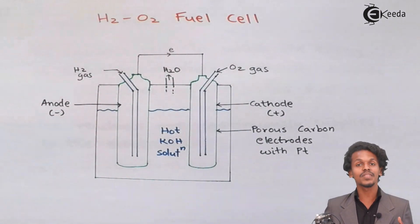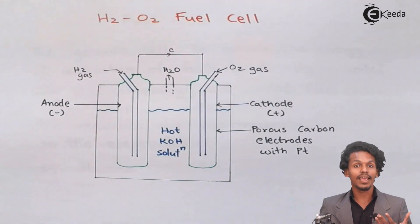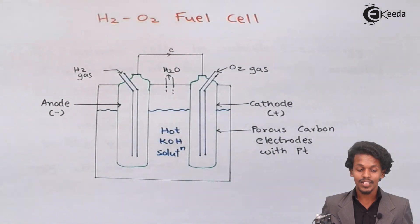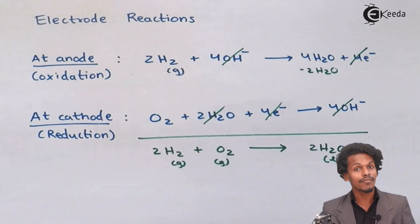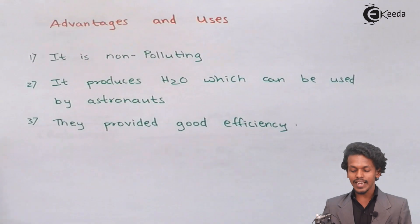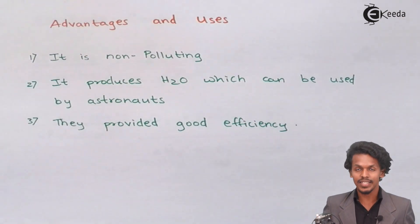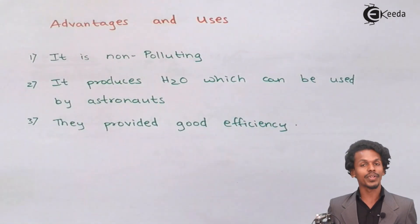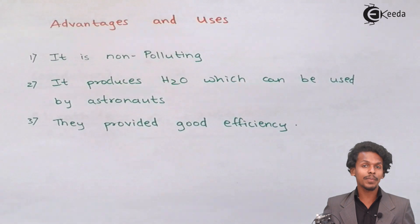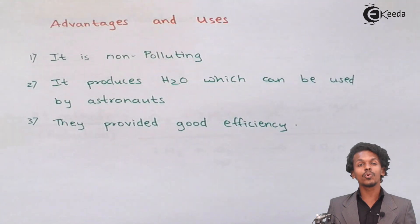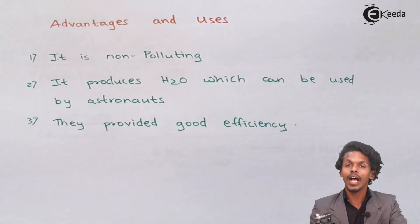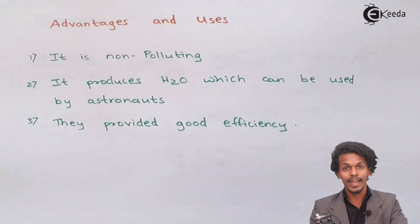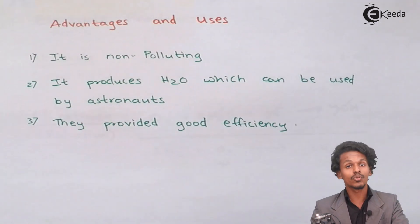This fuel cell is very efficient — it provides electricity as well as a useful product, water, which is beneficial for human beings. The first major advantage is that it is non-polluting. The fuels used are H₂ and O₂; oxygen is non-polluting, and their combination produces water, which is harmless and in fact very necessary for us.